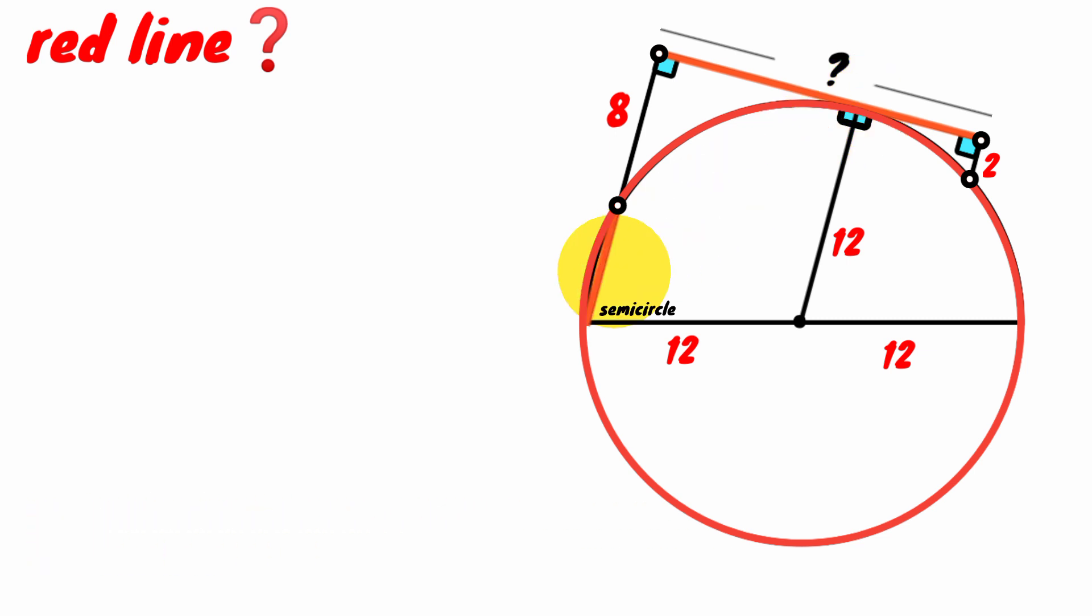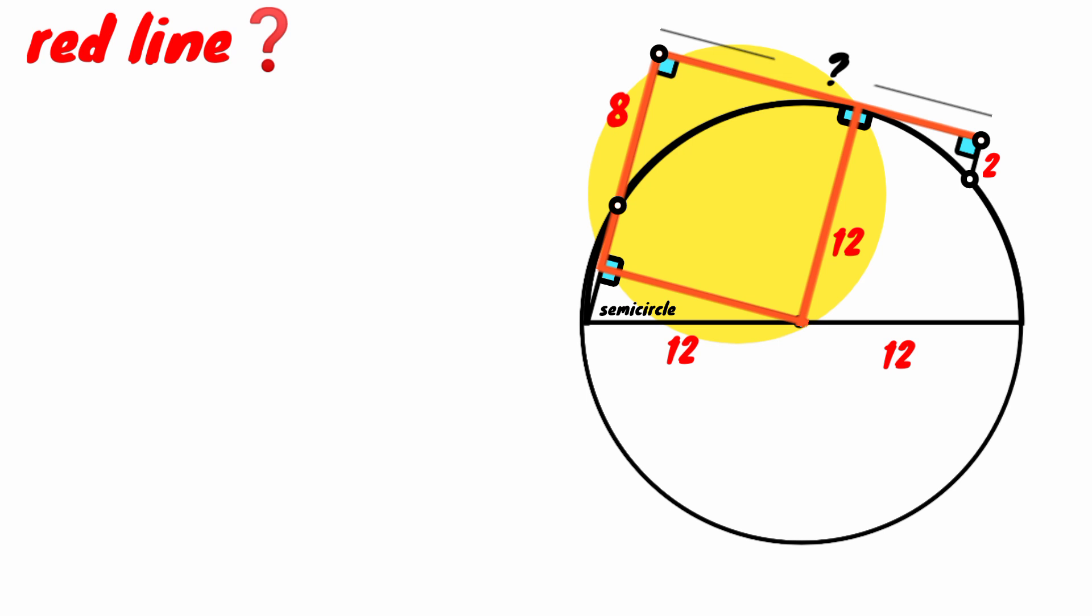Now we see this is a chord of the circle. We draw a perpendicular to it from the center. Then look at this quadrilateral. Three of its angles are right angles. This angle will also be right because the summation of angles in a quadrilateral is 360 degrees.